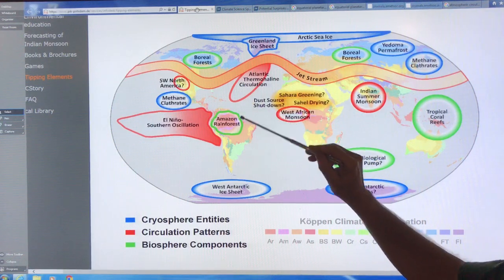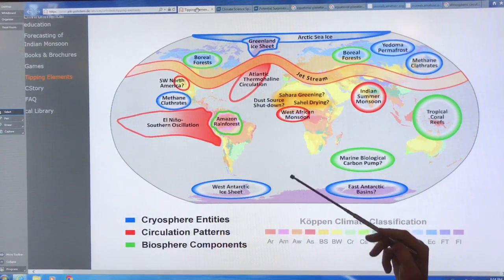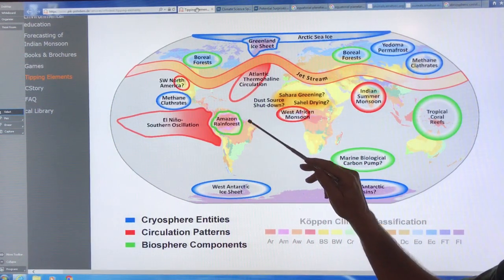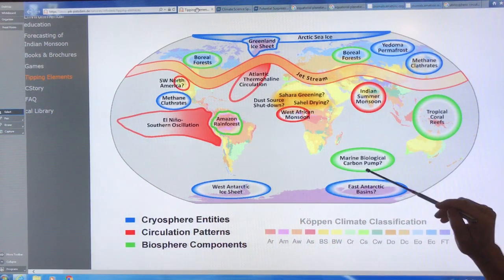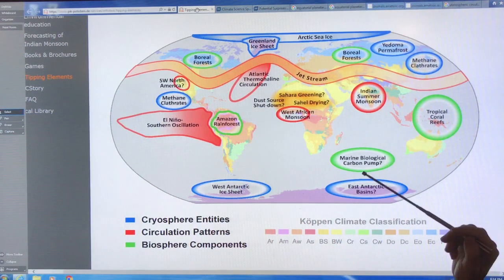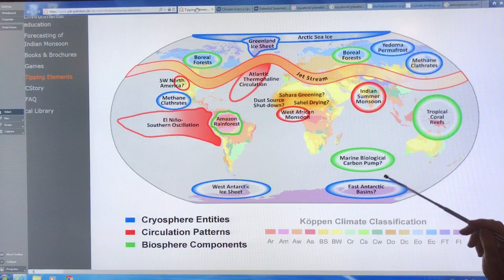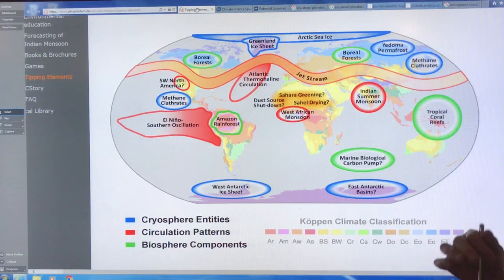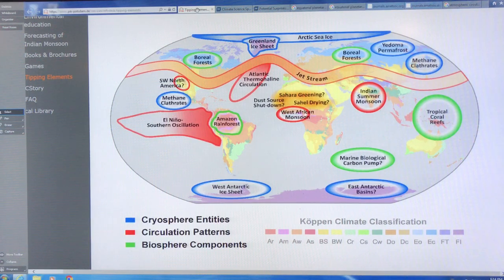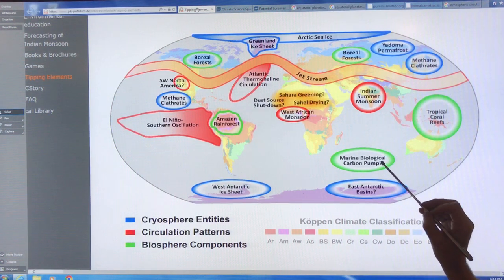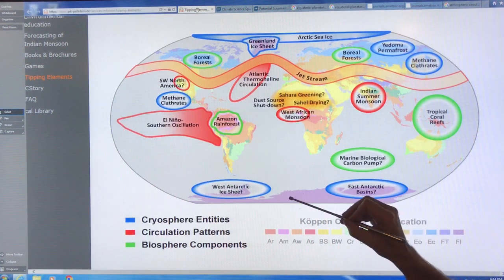There's also the Amazon rainforest, which is considered the lungs of the planet, if you like, on land. And then there's marine biological carbon pumps in the ocean. This is the phytoplankton that suck carbon out of the atmosphere. They're eaten. There's excrement going down. They die, they go down. It enters the ocean food chain. There's evidence showing that this is getting weaker and weaker in the southern hemisphere.